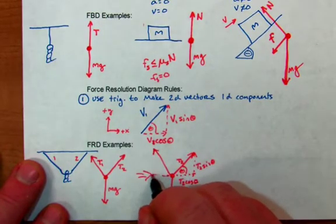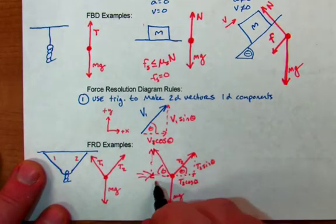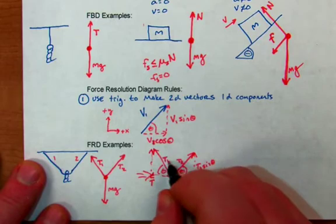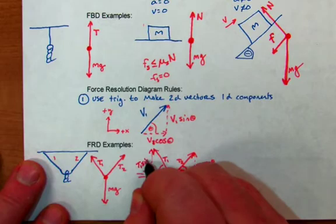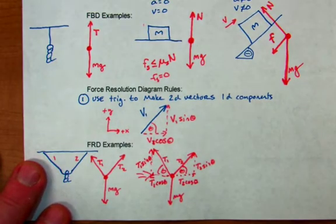Let's say, even though I drew it kind of poorly, that's the same angle, I would break these down. This is now, if this is T1, T1 cosine theta, T1 sine theta.